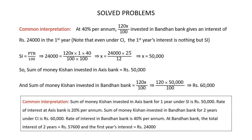Now finally we have the common interpretation: the sum of money Kishan invested in Axis Bank for one year under simple interest is Rs 50,000; rate of interest at Axis Bank is 20% per annum; sum of money Kishan invested in Bandhan Bank for two years under compound interest is Rs 60,000; rate of interest at Bandhan Bank is 40% per annum; the total interest received by Kishan at Bandhan Bank for two years is Rs 57,600; the first year's interest at Bandhan Bank is Rs 24,000. Now, using all this information, let's solve the given problems.